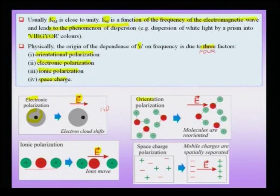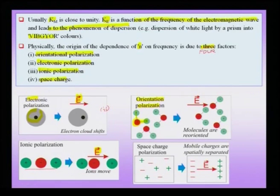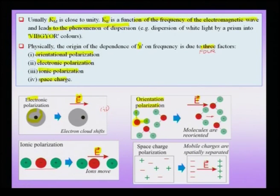The third point is orientation polarization, which we already discussed in the context of microwave heating of water. In a water molecule, oxygen is slightly negative and the hydrogens are slightly positive, and these molecules are oriented randomly in water. When an electric field is applied, there is a tendency for the dipoles to align themselves — all individual molecular dipoles align — and this is orientation polarization. Since entire molecules have to rotate, this kicks in at even lower frequencies compared to electronic or ionic polarization.